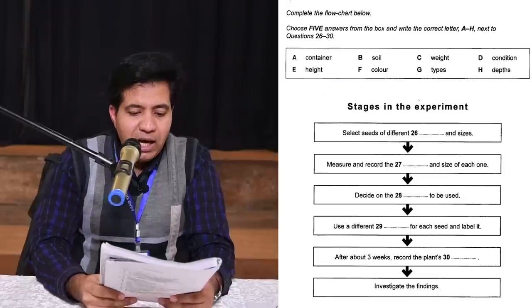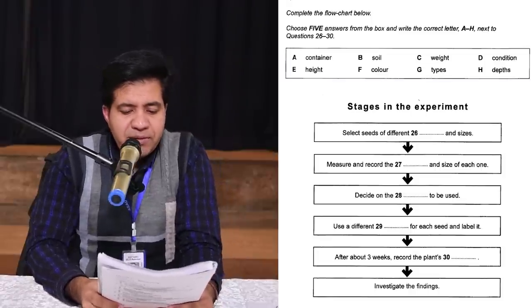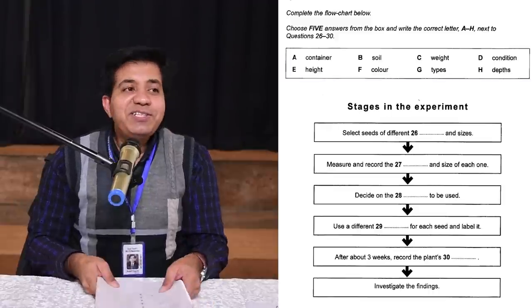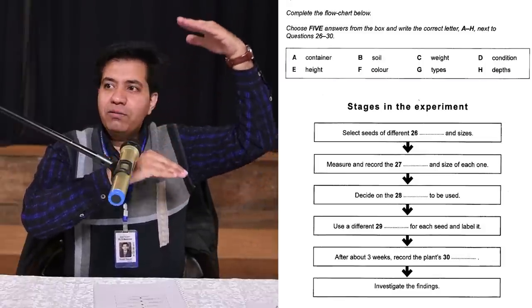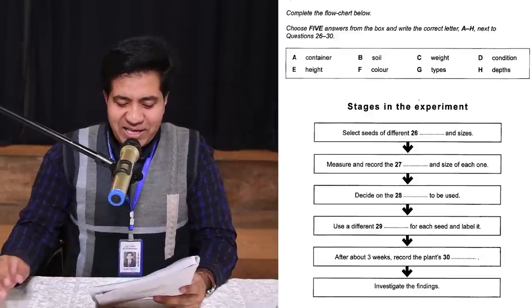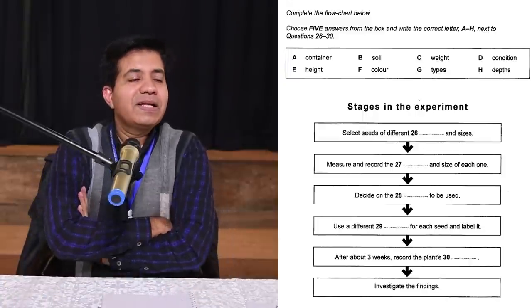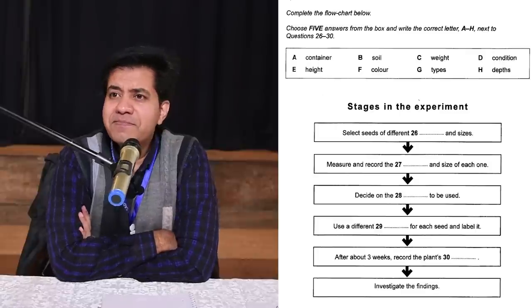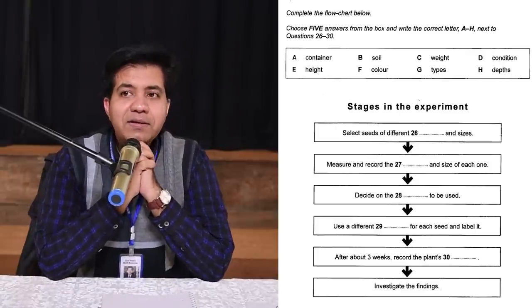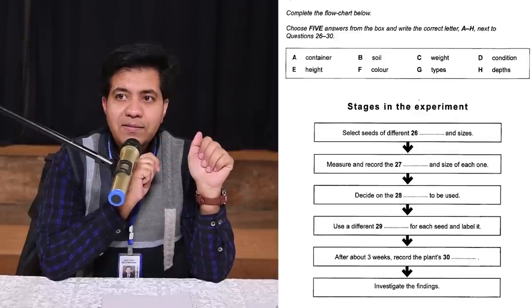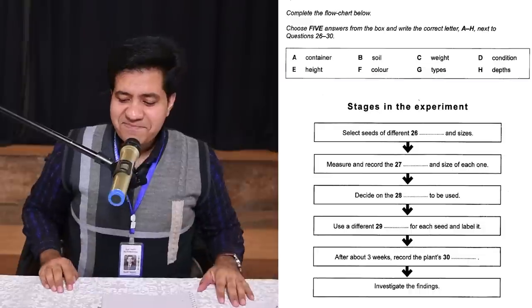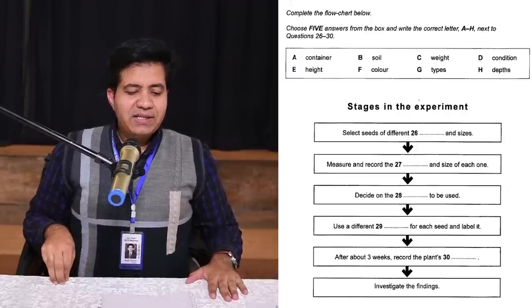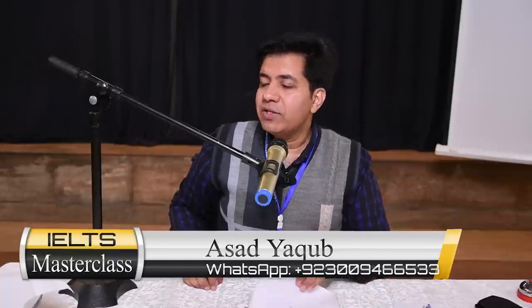Question 30: 'After about three weeks, record the plants' [blank].' In three weeks a plant will grow, so think about what you'd measure — height. Audio: 'We'll need to label them — we can use different colored labels — then we wait for the seeds to germinate. I reckon that'll be about three weeks depending on the weather. Then we see if our plants have come up and write down how tall they've grown.' 'How tall they've grown' is height — so the answer is E (height).